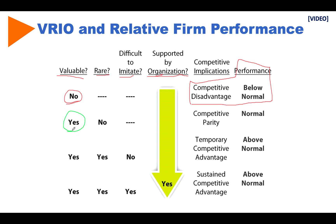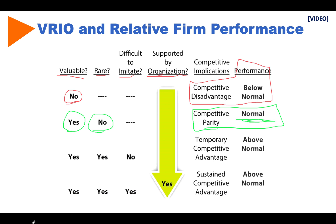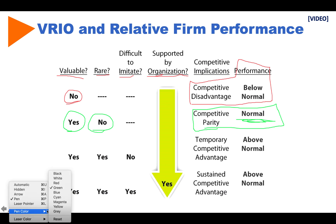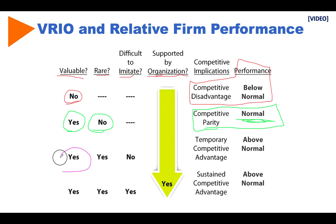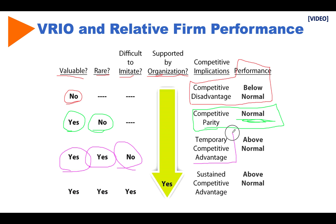If our resource or capability is valuable but not rare — if anybody can copy it, anybody can get their hands on it — we call this competitive parity and we might have average levels of performance. The next step is whether it is difficult to imitate. If we have a valuable, rare resource but it's not hard for our competitors to imitate and it's not substitutable, this might give us a temporary competitive advantage.